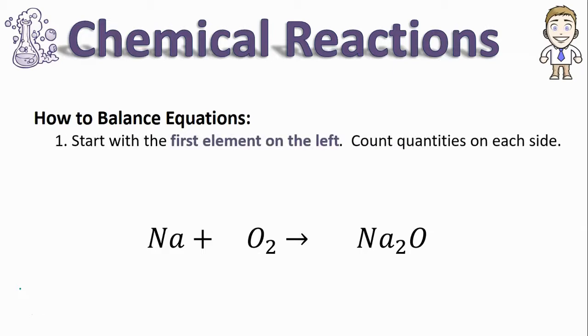In this reaction my first element is sodium, and on the reactant side there's only one sodium, so I'm going to write one beneath that symbol to keep track. On the product side I find the same element symbol Na. In this case it says Na2, meaning there are two sodium atoms.